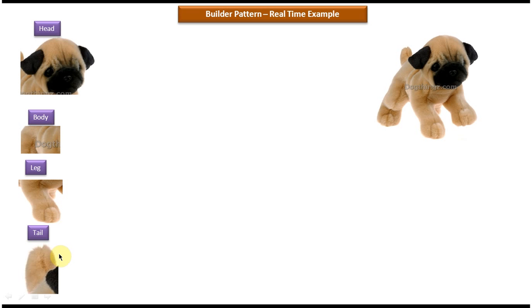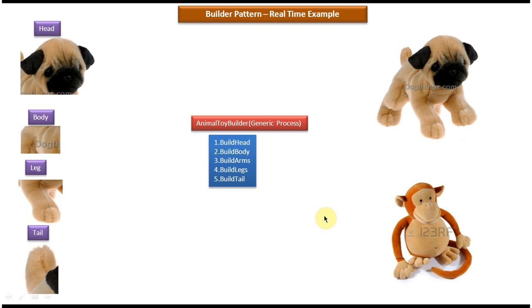Suppose I want to create a monkey toy. Then I have to use small parts like monkey head, monkey body, monkey leg, and monkey tail to construct the monkey toy. If you see, constructing a dog toy or constructing a monkey toy follows the same steps. So I can prepare a generic process.